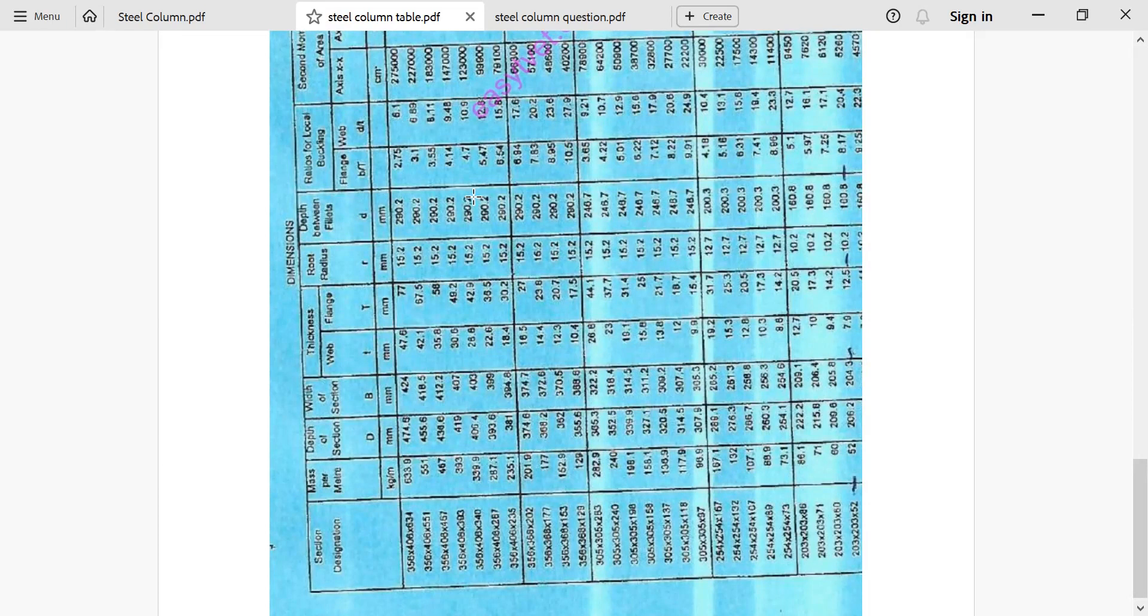So the properties we've been talking about, for example, look at thickness. We have web and flange. Web is small t. When you look at it, you get it to 7.9 and flange is 12.5. That is how we read these values.